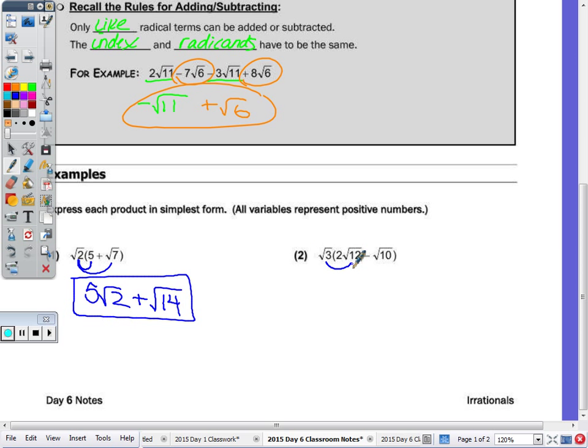Number 2, radical 3 times 2 radical 12. If it's easier, put a 1 out front so you know or remember to multiply your coefficients. 1 times 2 is 2, square root of 3 times 12 is 36, minus 1 times 1 out front is 1. Radical 3 times radical 10 is radical 30. So looking at what you can simplify, we can take the square root of 36, that's a perfect square. So this is really 2 times 6, which is 12, minus 30. The factors are 1 times 30, 2 times 15, 3 times 10, and 5 times 6, none of which are a perfect square. So that stays 12 minus radical 30.